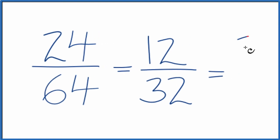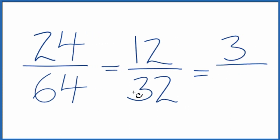12 divided by 4, that's 3. 32 divided by 4, that's 8. 8 times 4 is 32.